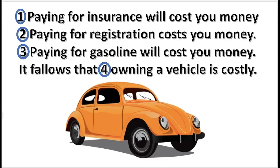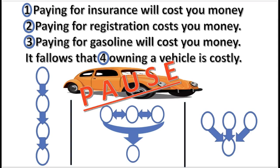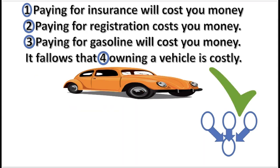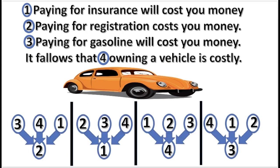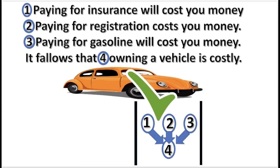Here is another practice problem. Begin by choosing the correct pattern for this argument. Press pause. That is correct — 3 premises support the conclusion independently. Next, choose the correct sequence of numbers in the argument. Press pause. That is correct.